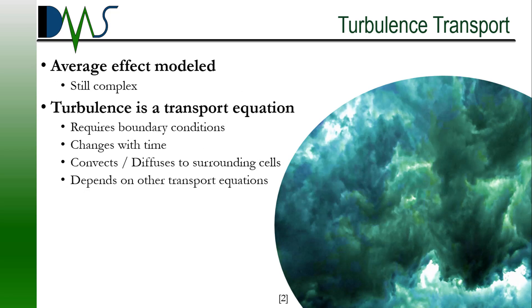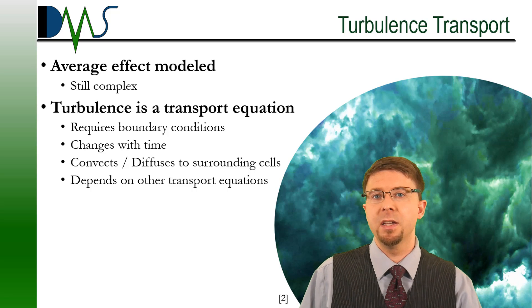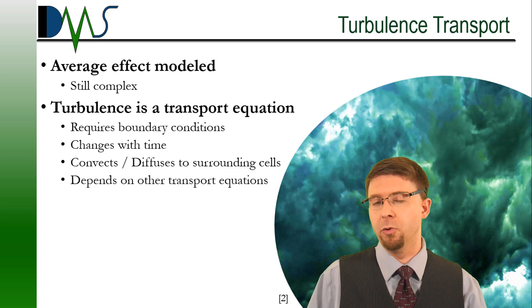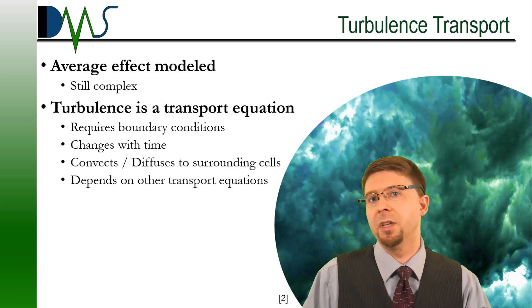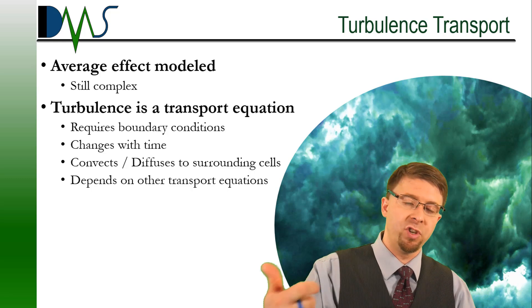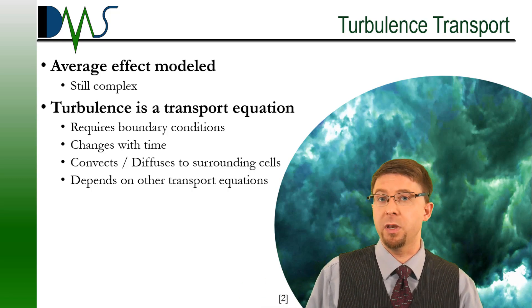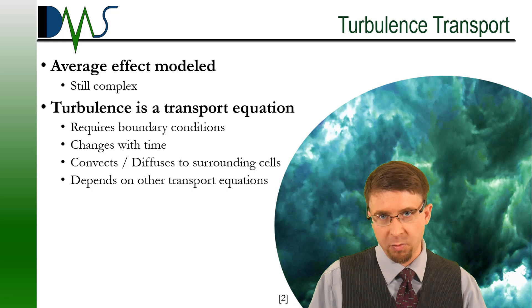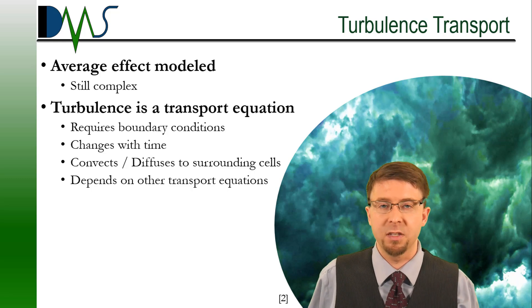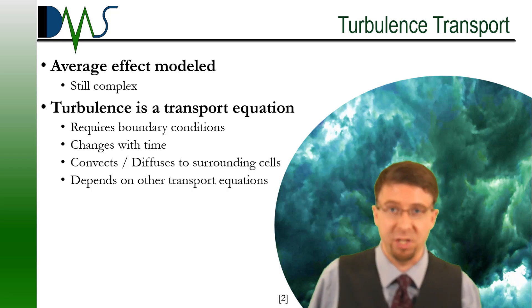So we had this beautiful idea of just modeling the average effect of turbulence. Well, it still ended up with a complex problem. We didn't turn into anything simple. We, in fact, had to create a whole new set of transport equations for turbulence. Turns out that turbulence is something that changes in the fluid domain. It builds, it dissipates, it evolves, it shifts from one region to another. Something that we needed a transport equation to keep track of. In fact, in most cases, we actually need two transport equations to keep track of turbulence.